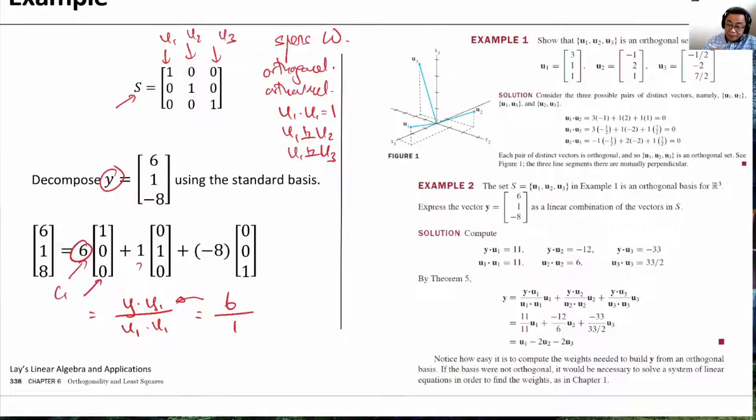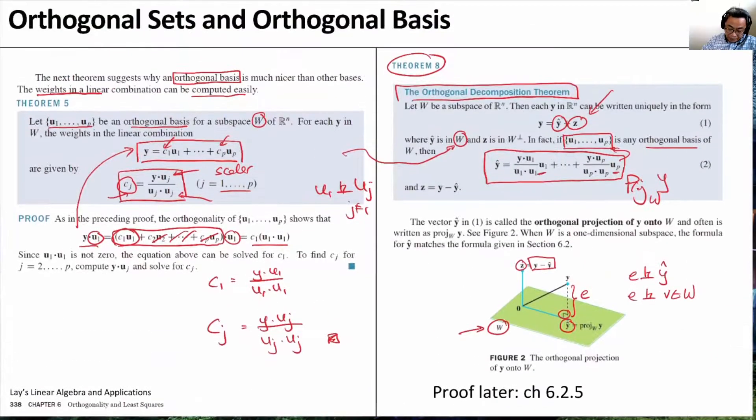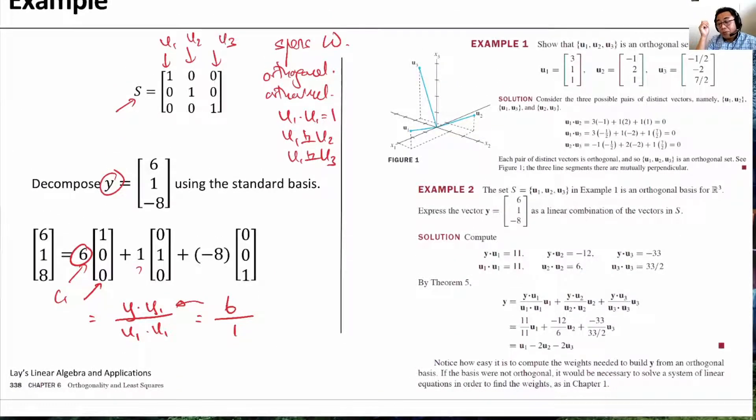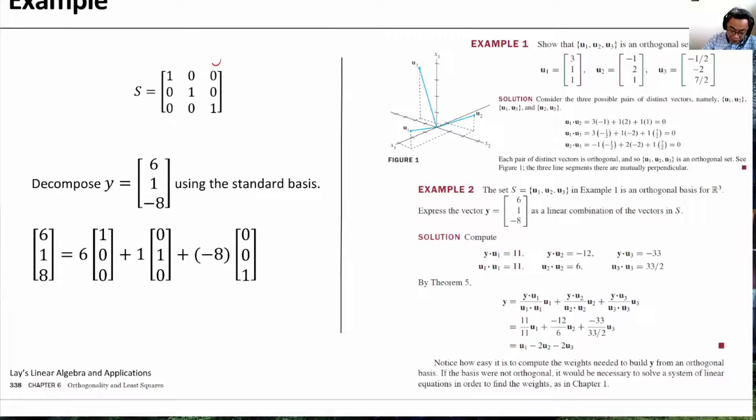And this vector is U1, like what we have in theorem 5. So you realize that when we have an orthogonal basis, the weights are easily found. Now, the more direct way of looking at this, of course, is that if we already realize that this is the identity matrix, then all we are doing is to break the elements of 618, the R3 element equals to Y, into three parts.